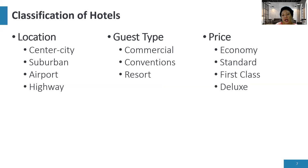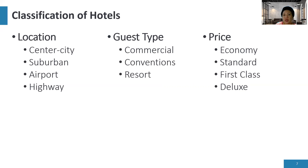Another type based on guest type is conventions hotels. These typically offer services to business travelers and usually have large function halls because they cater to events. Next is resort hotels — from the term itself, their guests are those who seek recreation and leisure.